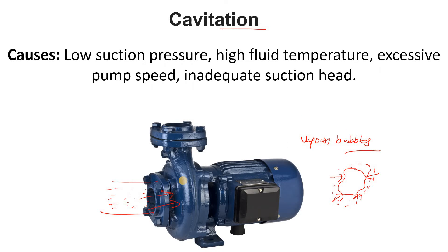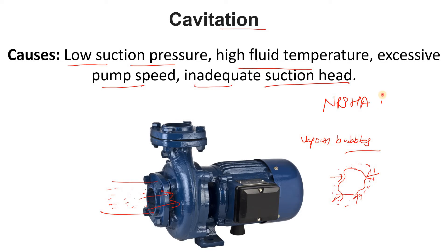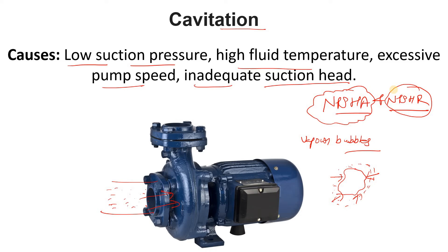The causes of cavitation include low suction pressure, high fluid temperature, excessive pump speed, and inadequate suction head. NPSH — net positive suction head available and required — plays a very important role. When sizing a pump, NPSH available is calculated by the process engineer and NPSH required is given by the pump manufacturer.